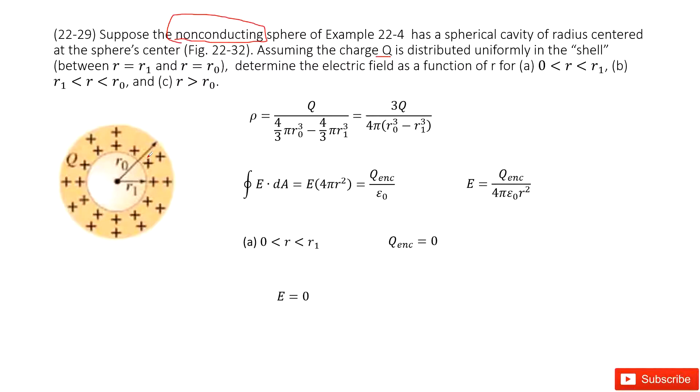For this one, first we can determine the charge density. The charge density is the total charge Q divided by volume for this shell, which uses the outer radius minus inner radius. This is the volume for this shell.